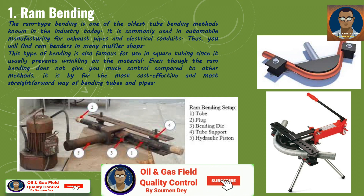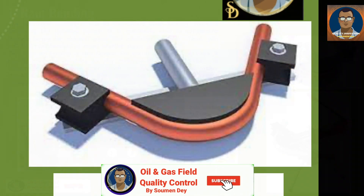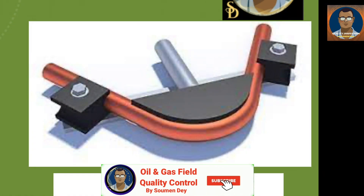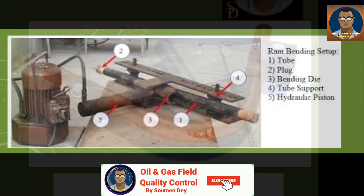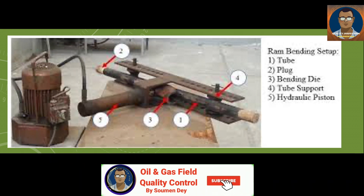Ram bending is commonly used in automobile manufacturing for exhaust pipes and electrical conduits. This type of bending is also famous for use in square tubing since it usually prevents the wrinkling of the material. Even though ram bending does not give you much control compared to other methods, it is by far the most cost-effective and most straightforward way of bending tubes and pipes.